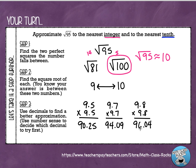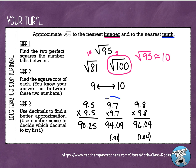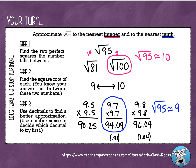So 95 definitely falls between 94.09 and 96.04. Let's see how far apart they are — thinking of it as money makes decimals easier. 94.09 is about 91 cents away from 95, and 96.04 is about a dollar four away. They're both really close, but if I had to pick the one that's closest, it's 94.09. So the square root of 95 is approximately — that squiggly equal sign — 9.7.